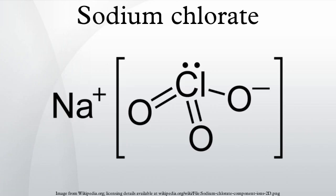Synthesis: industrially, sodium chlorate is produced by the electrolysis of a hot sodium chloride solution. This reaction progresses in heat and controlled pH. At lower temperature or with high pH, another reaction progresses.